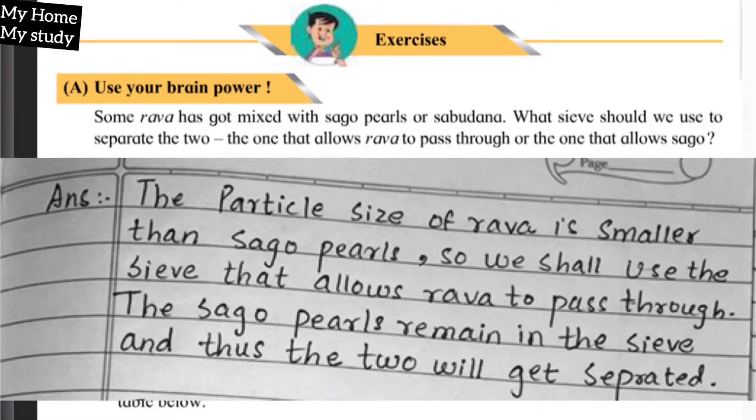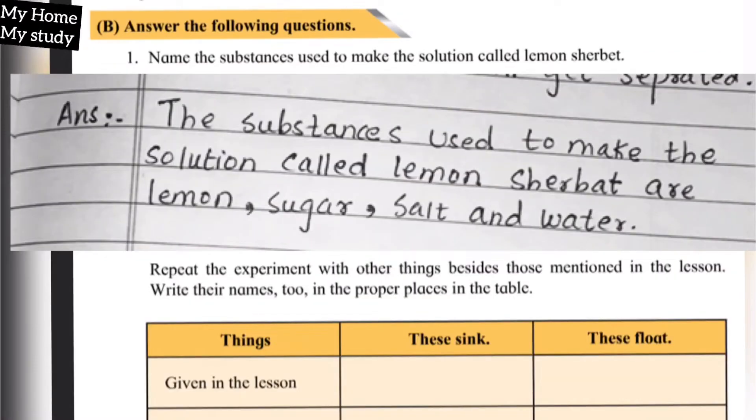Next: Name the substance used to make the solution called lemon sherbet. What do we need to make lemon sherbet? The substances used to make the solution called lemon sherbet are lemon, sugar, salt, and water.